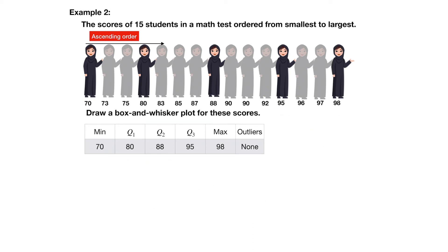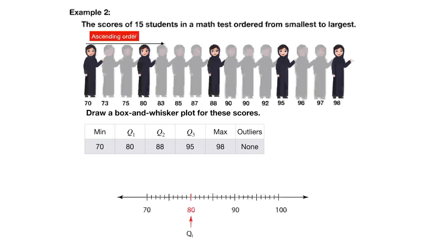Now we are ready to draw the box and whisker plot. First, we create the number line. The lowest score is 70 and the highest score is 98, so we start at 70 and go by 10 up to 100. Now let's plot Q1, Q2, Q3 values on the number line. Q1 is 80, Q2 is 88, and Q3 is 95. The box consists of three vertical parallel lines and two horizontal parallel lines.